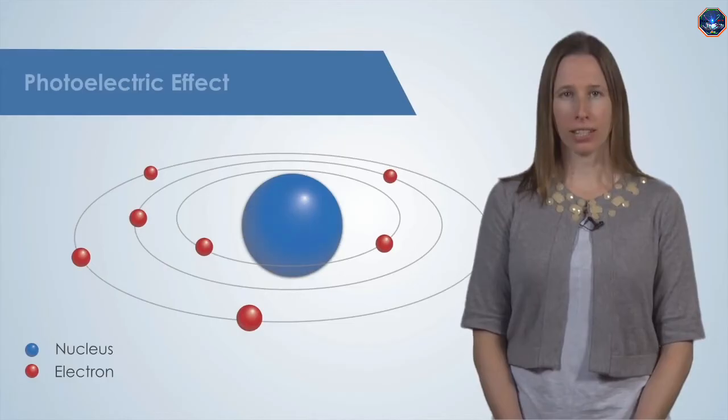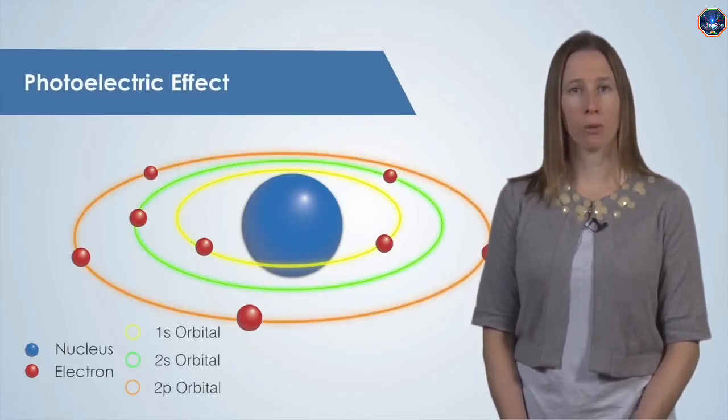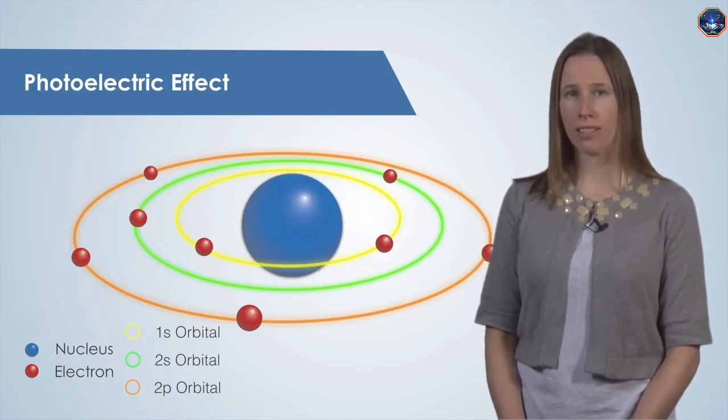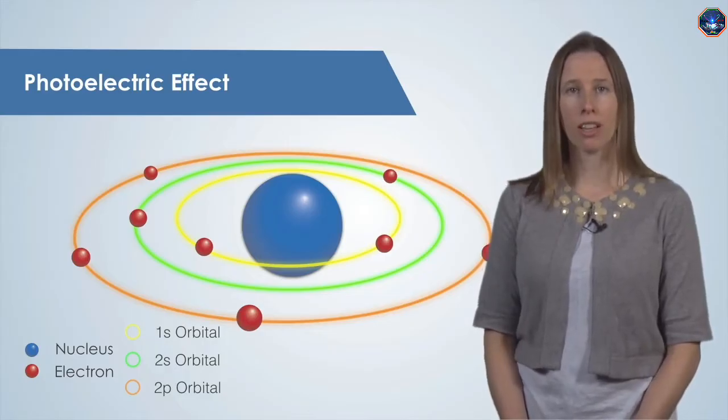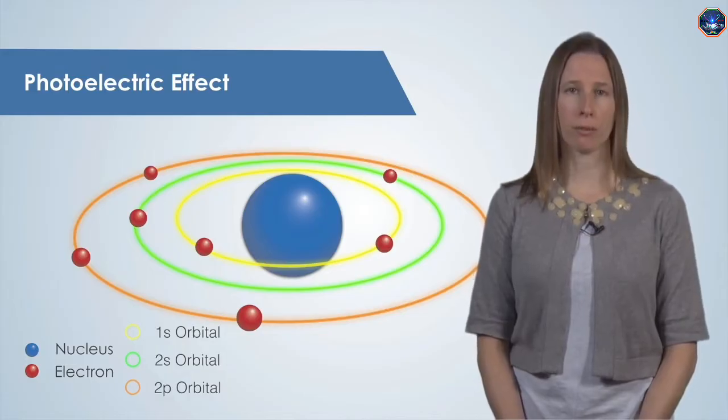An atom consists of electrons that orbit a nucleus. This atom contains electrons in the 1s, 2s, and 2p orbitals. Remember that electrons that are closer to the nucleus, like the ones in the 1s orbital, are held more tightly than those in orbitals that are farther from the nucleus.